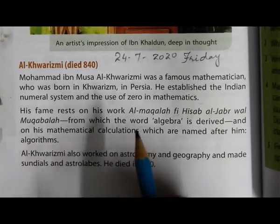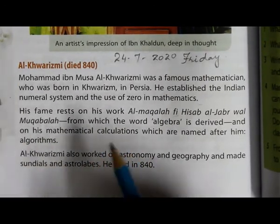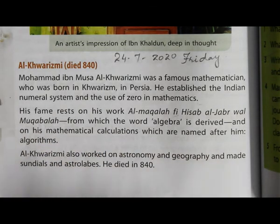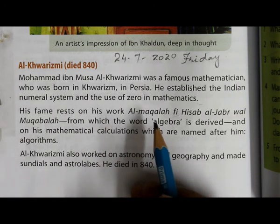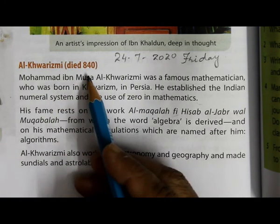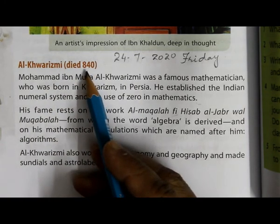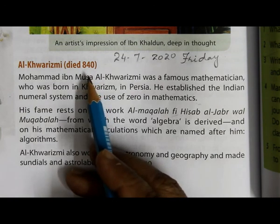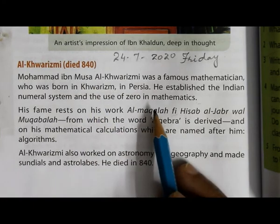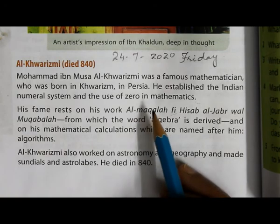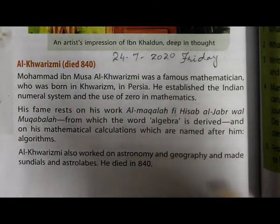Among his achievements, he introduced the Indian numeral system and established the use of zero. Before Al-Khwarizmi, zero was not used in mathematics. Consider how long ago this was — he died in 840, and now it is 2020 — so this contribution to mathematics was made so long ago and is still in use today. It is a very great achievement.